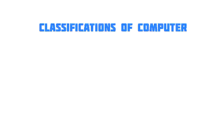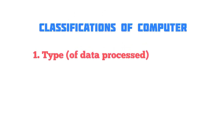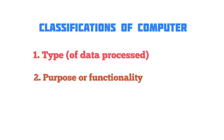Computers are classified according to: one, type of data processed; two, purpose or functionality; three, size.